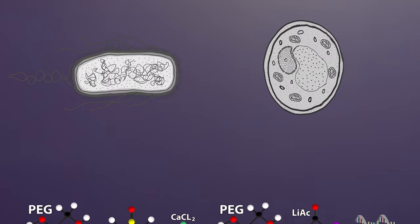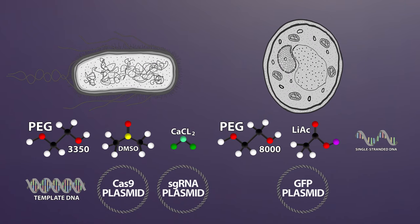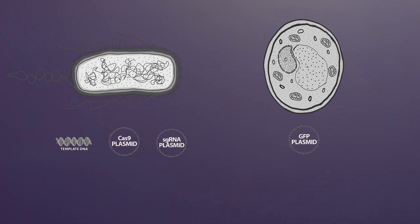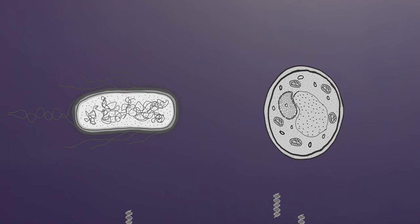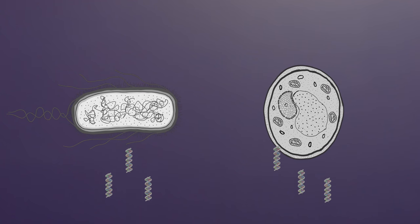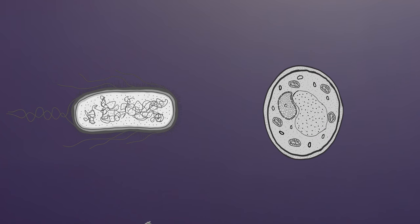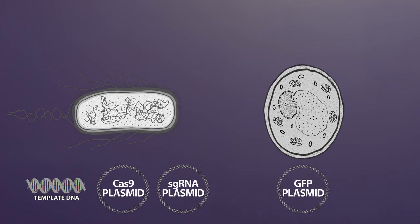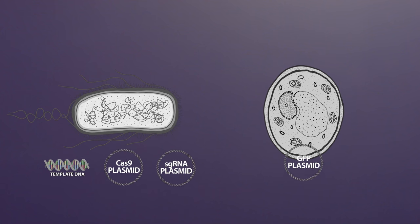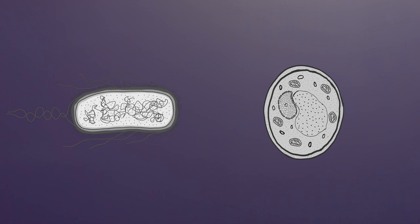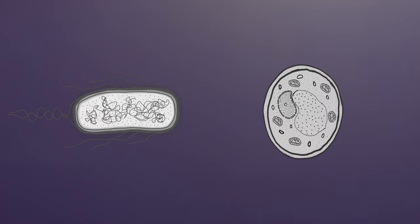Before any genetic engineering can take place, we need to get all the components that will do the work inside the cell. The cell walls of yeast and E. coli by themselves don't usually allow just anything in. Only by successfully making the cells competent are we able to reliably get the modified DNA and the other components past the cell walls.